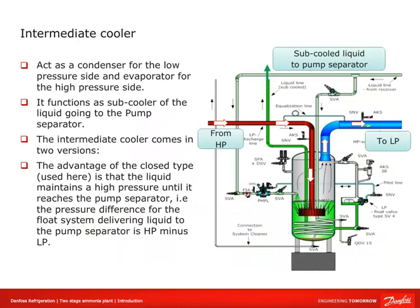The intermediate cooler acts as a condenser for the low-pressure side and as an evaporator for the high-pressure side. It also functions as a sub-cooler of the liquid going to the pump separator. The hot gas coming from the high-pressure side mixes with liquid ammonia and evaporates some of it, meaning the amount of refrigerant going through the suction side of the high-pressure compressor is greater than the amount of ammonia delivered from the low-pressure compressor into the intermediate cooler.